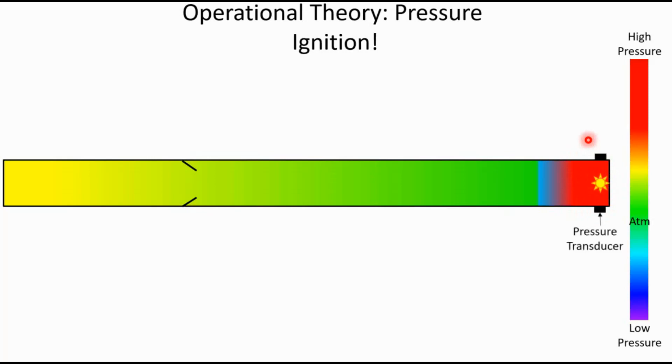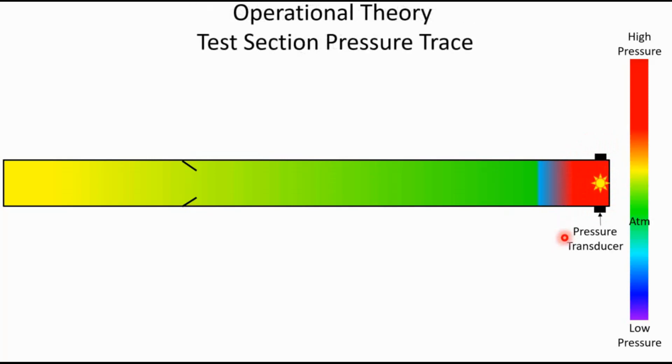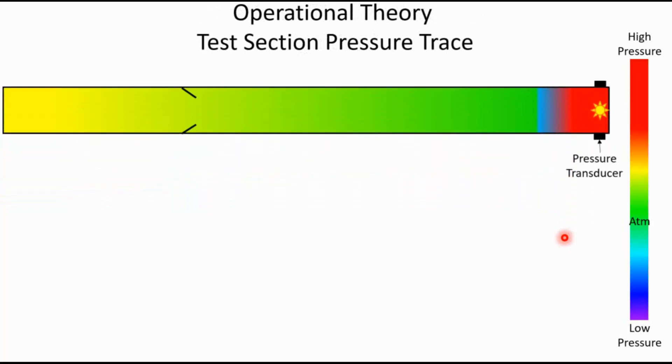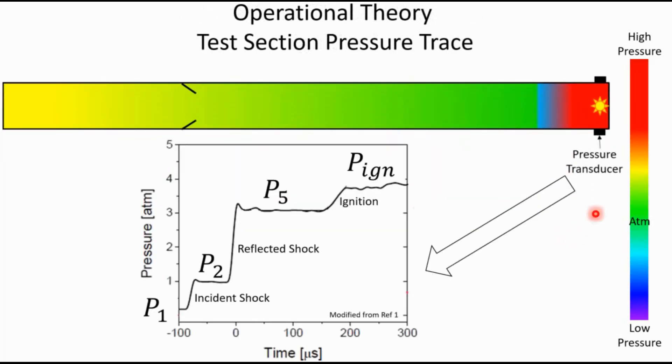Now remember that we have instrumentation ports in our test section. One of our pieces of instrumentation is a pressure transducer, and if we were to look at a trace of that pressure transducer—remember, it's measuring the pressure at this one spot over the course of time—that trace would look like this.